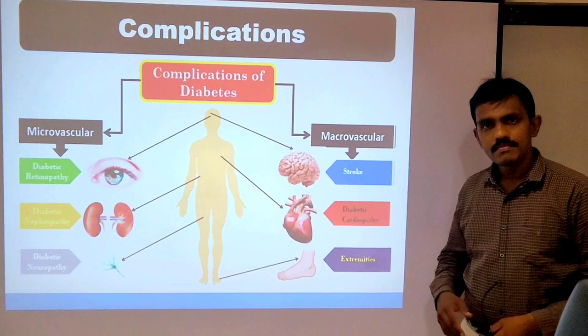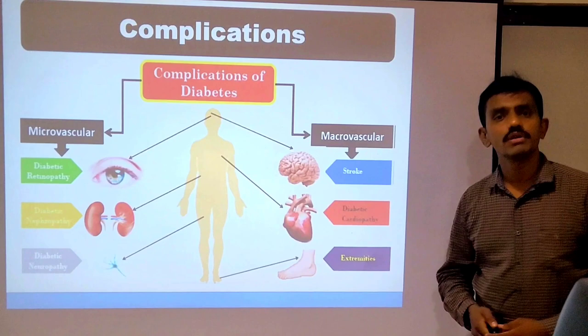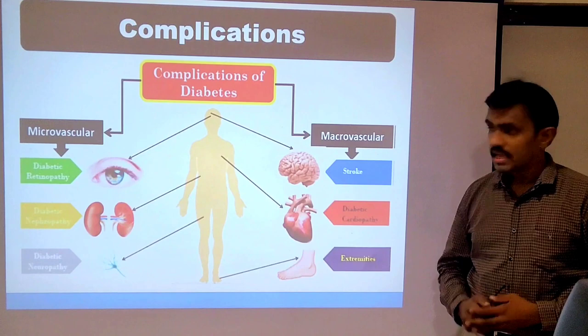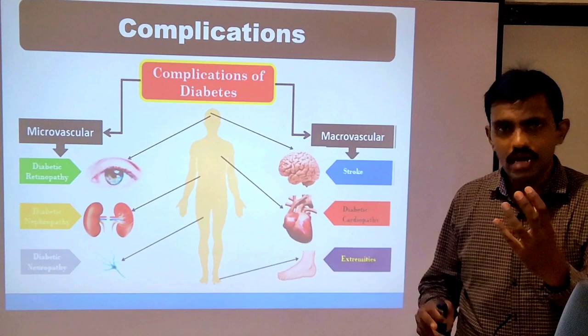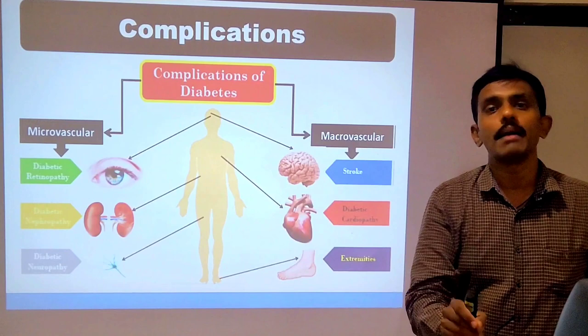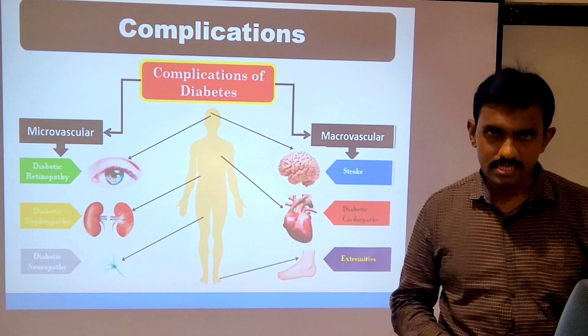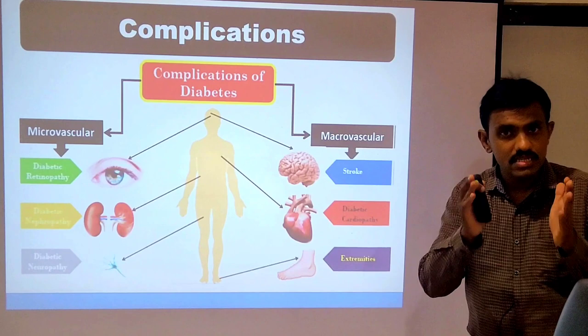Macrovascular complications involve larger blood vessels. Damage to cerebral blood vessels can lead to brain stroke. Damage to cardiac blood vessels leads to cardiopathy — heart disease. In fact, eight out of ten people suffering from diabetes die not because of diabetes itself, but because of cardiovascular issues. Diabetes is one of the major reasons for heart attack.